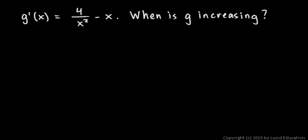In this problem we're given g'(x) = 4/x² - x and we're asked when is g increasing. Function g will be increasing when the derivative of g is positive, and what we're given here is the derivative of g.